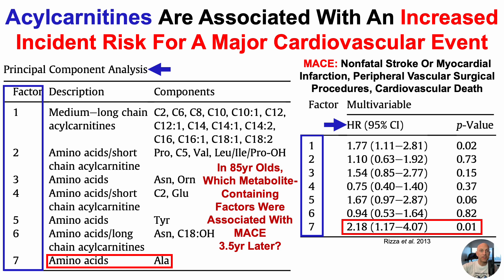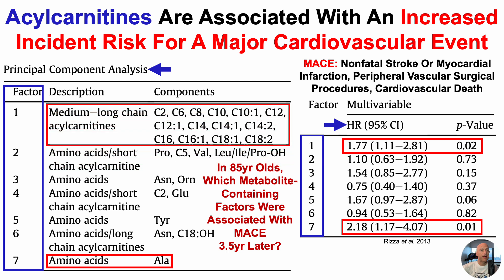But this is an acylcarnitine-focused video, so you can guess what was also associated with having a major cardiovascular event. That was factor 1, which showed a 77% increased risk for relatively higher levels of the metabolites in factor 1 — medium and long-chain acylcarnitines, C2, C6, C8. To nitpick, C2 (acetylcarnitine) and C6 (hexanoylcarnitine) are short-chain fatty acids, so that group should more accurately be short, medium, and long-chain acylcarnitines. They also include unsaturated acylcarnitines — the 14-1, 12-1.